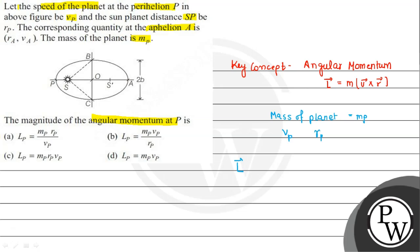And angular momentum here, the Lp will be equal to - in the form of vector, not a normal scalar quantity. So Lp will be equal to mp·rp into vp.